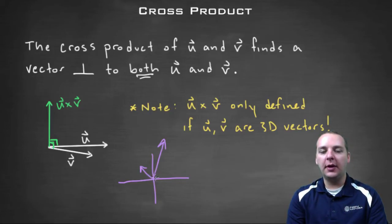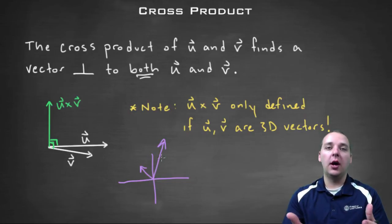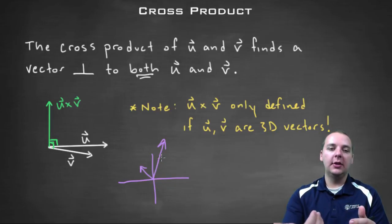Because whatever vector you would draw that would be perpendicular to one of them probably wouldn't be orthogonal to the other one as well. And so the only way to get a vector that's always orthogonal to both of those is to come out in a third dimension.